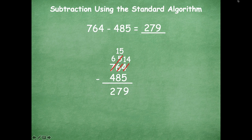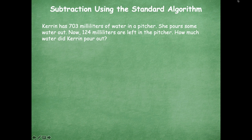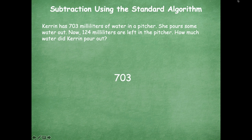Awesome job! Don't worry if you didn't get it — we'll practice more. Let's look at another one. Karen has 703 milliliters of water in a pitcher. She pours some water out. Now 124 milliliters are left in the pitcher. How much water did Karen pour out? We know she started with 703, poured some out, and had 124 left. Are we going to add or subtract to find how much she poured out? We're going to subtract — good job friends!